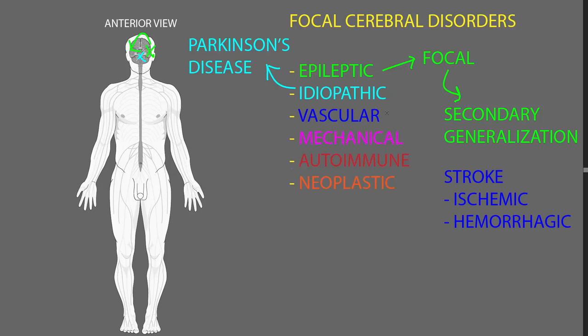For vascular disorders that can cause focal cerebral syndromes, the most common are what we call stroke. There are a couple of kinds: the most common being ischemic, where blood flow is cut off to part of the brain causing injury to that part, and less commonly hemorrhagic stroke, where there's bleeding that involves the brain tissue.